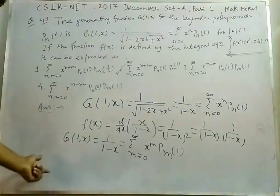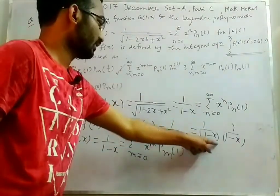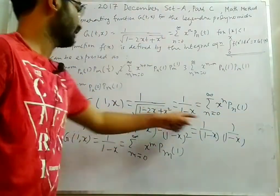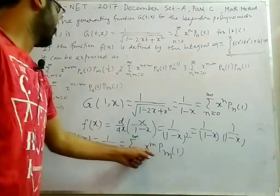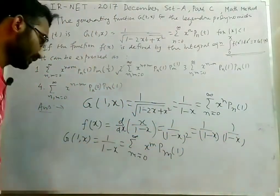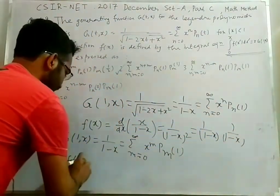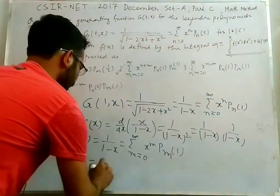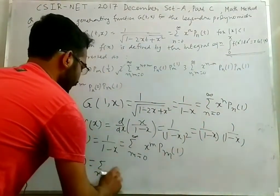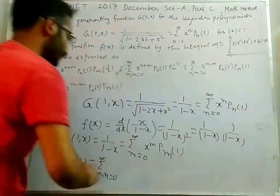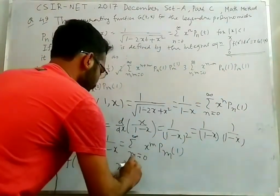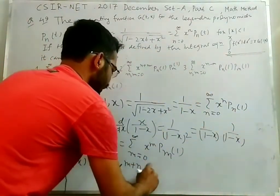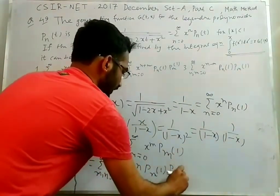If we put the value of this 1 by 1 minus x to be this, and this 1 by 1 minus x to be this, then what we will get? We will get f(x) equals sum over m, n from 0 to infinity x to the power m plus n into p_m of 1 into p_n of 1.